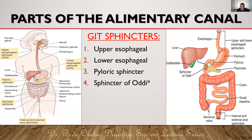So the sphincter of Oddi is located in the duodenum to basically control flow of both bile and pancreatic juice into the duodenum. Then we have the ileocecal valve, which is a valve-like structure that prevents backflow from the cecum into the small intestine. Once intestinal contents have moved from the small intestine to the large intestine, they should not go back — this valve prevents that reflux.